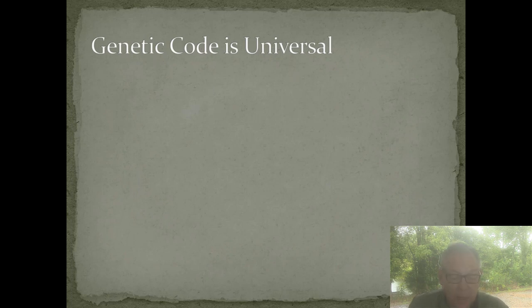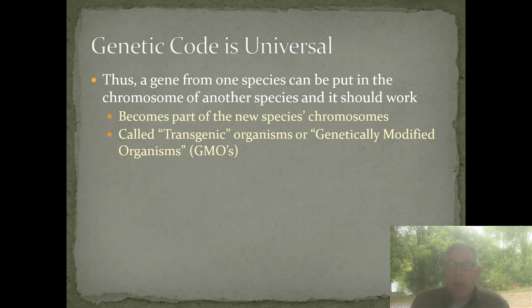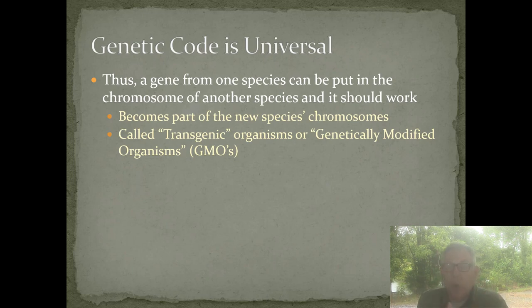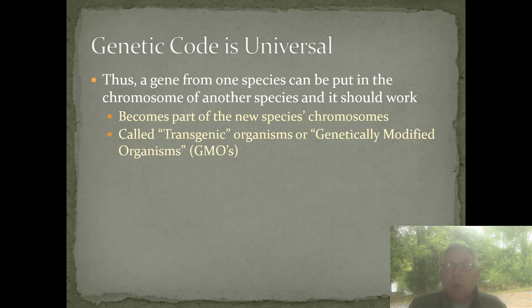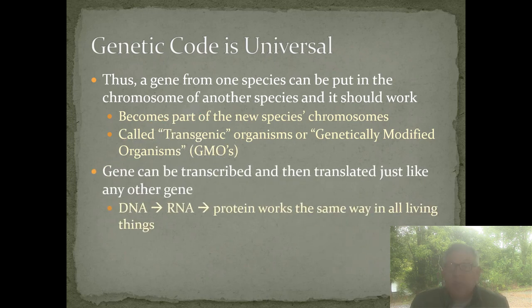You'll recall that we made a big deal about the fact that the genetic code is universal. Every living thing transcribes DNA into RNA and then translates that into protein using the exact same codons and the exact same amino acids. What this means is that you can take a gene from one species, put it in the chromosome of another species, and it'll work because that mechanism is the same for all living things. That new gene becomes part of the new species' chromosomes, and that's what we call a transgenic organism or a genetically modified organism.